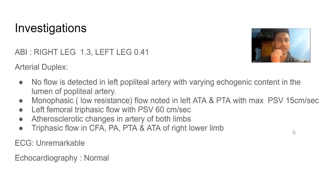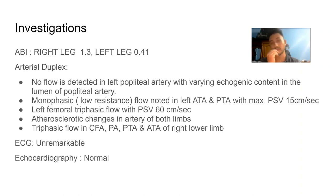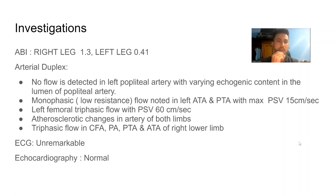ABI: right leg 1.3, left leg 0.41. Arterial duplex: no flow in the left popliteal artery with varying echogenic content inside the lumen; monophasic low-resistance flow in the left anterior tibial artery with peak systolic velocity only around 15 cm/s. The left femoral artery shows triphasic flow with PSV more than 50 cm/s, with atherosclerotic changes throughout the arterial segment from femoral to the posterior tibial artery. Right leg shows triphasic normal flow. ECG and echocardiography are unremarkable.